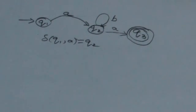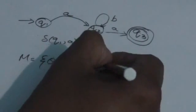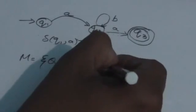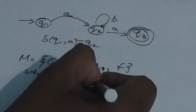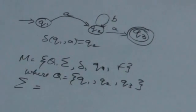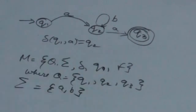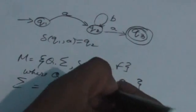This graph can also be represented mathematically. This automata M equals (Q, Sigma, delta, Q1, F), where Q1 is the initial state. Q is the set of all states: Q = {Q1, Q2, Q3}. Sigma is the set of input symbols — here there are only two input symbols, A and B. F is the set of final states, and here there is only one final state, Q3.